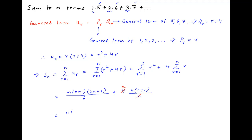Take n times n plus 1 upon 6 common, multiplied by 2n plus 1 plus 6 times 2. And this is equal to n times n plus 1 upon 6, multiplied by 2n plus 13. And this is the required answer.